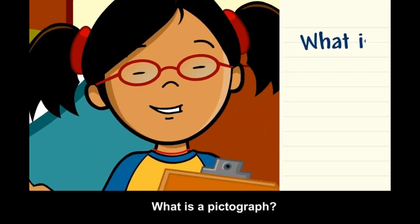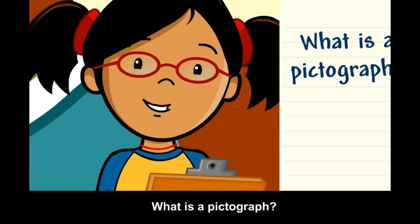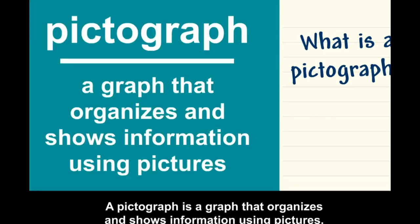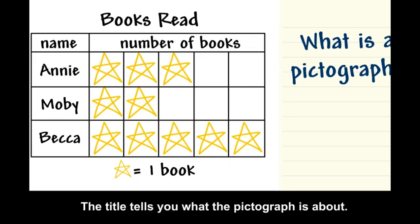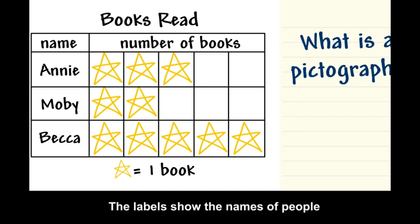What is a pictograph? A pictograph is a graph that organizes and shows information using pictures. The title tells you what the pictograph is about. This graph shows how many books people read. The labels show the names of people and the number of books each person read.